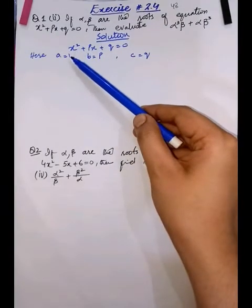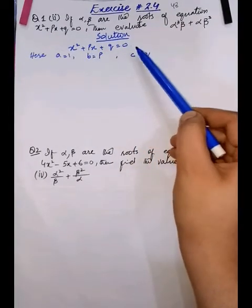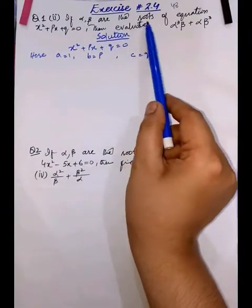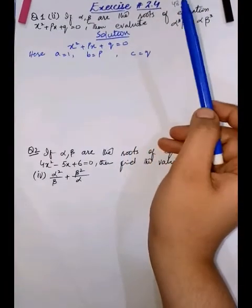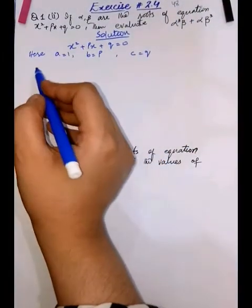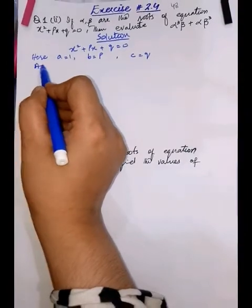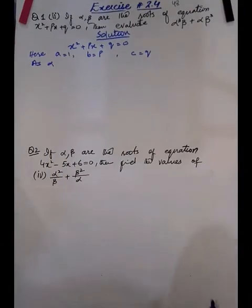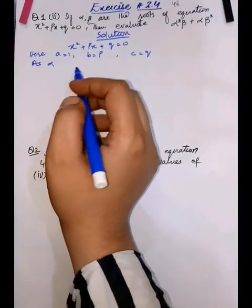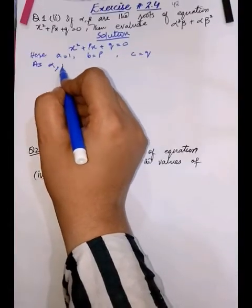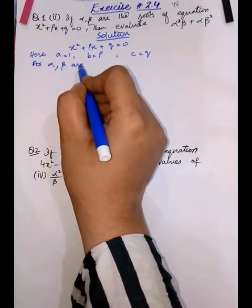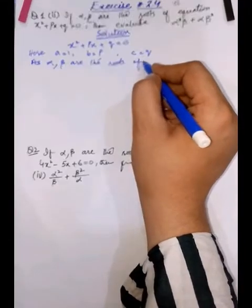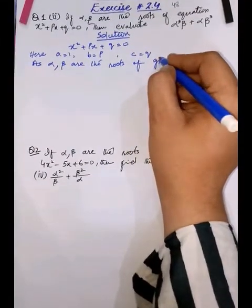Here, 'a' is the coefficient of x², 'b' is the coefficient of x, and 'c' is the constant. And we are given that alpha and beta are the roots of this equation. Since alpha and beta are the roots of the given equation.